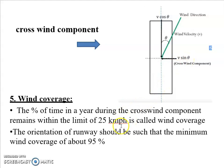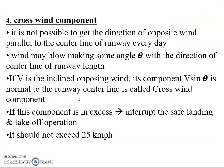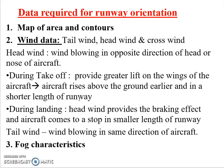The crosswind component limit is 25 km per hour, and this wind coverage condition must be satisfied. The next topic is fog characteristics.